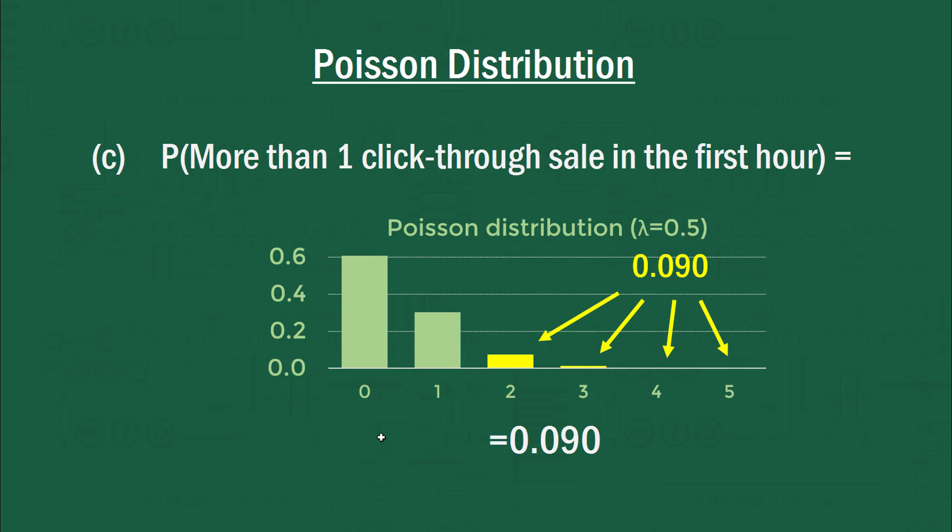And I'll just reiterate that it's very important to read strictly what was written in the question here because it says more than 1 click-through sale. If it said 1 or more, we'd actually get a different answer because we'd be after this probability as well. So this would also be yellow, where x is 1. All right, so how did you go? Hopefully you got those same answers.